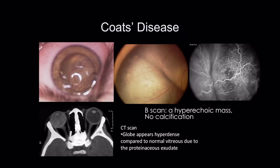Coates disease is a condition where you get an exudative retinopathy. You can see here there's a retinal detachment with a yellowy reflex underneath. These are not seeds — these are exudates — and the blood vessels are on the retinal surface. On fluorescein angiography, you can see these telangiectatic blood vessels, which is a hallmark of Coates disease.